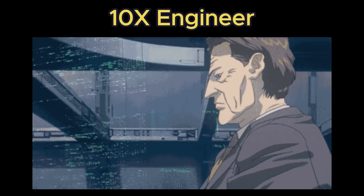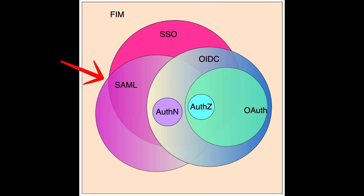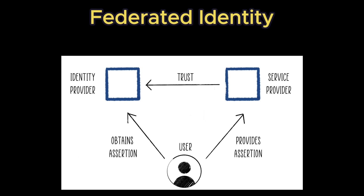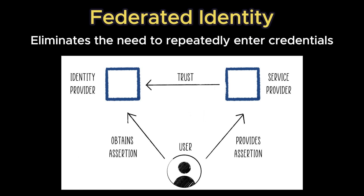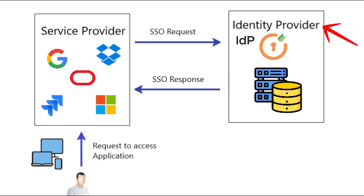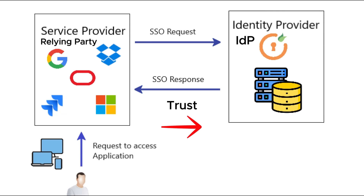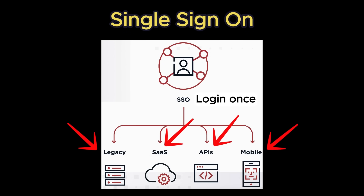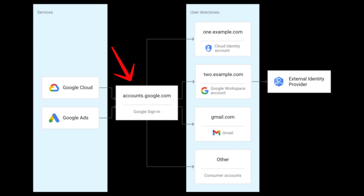The best way to learn a new computer science concept is to start with a concrete definition. Both SAML and OIDC were designed to solve a specific challenge: how to allow a user to log into one application using credentials managed by another. This idea is called Federated Identity. Instead of every application maintaining its own usernames and passwords, one trusted identity provider, or IDP, handles authentication. Other applications called service providers, or relying parties, trust the identity provider's assertions. The user gets the benefit of single sign-on, or SSO — log in with one set of credentials and access many different services — while organizations gain security and centralized control.